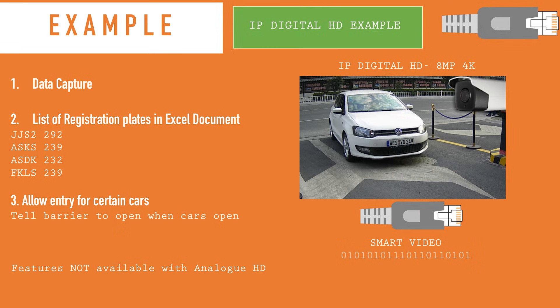IP cameras also tend to have a relay connection, which you could plug into a barrier or a siren to automatically trigger. For example, at the airport as you enter the car park, your number plate is captured by an IP camera, and on your way out that's connected to the gate system which allows the gate to open — because it's extracting data from the image. That's one of the main differences between an analog and an IP camera.